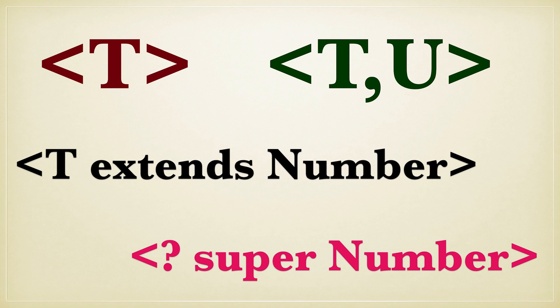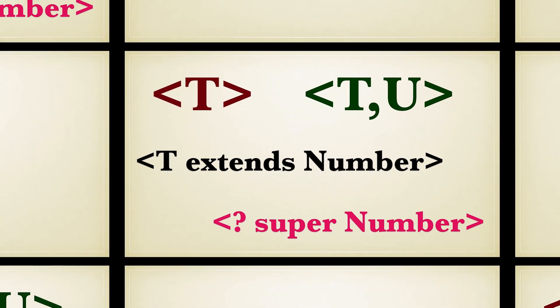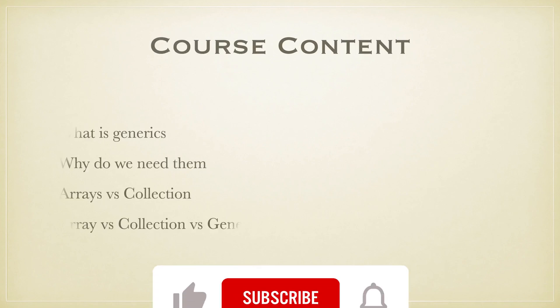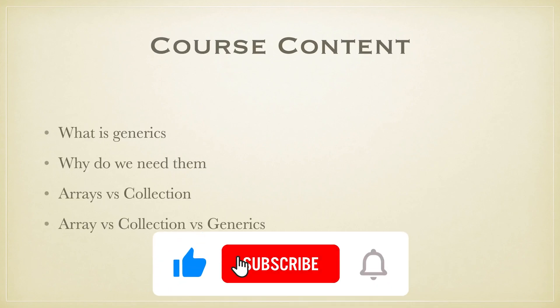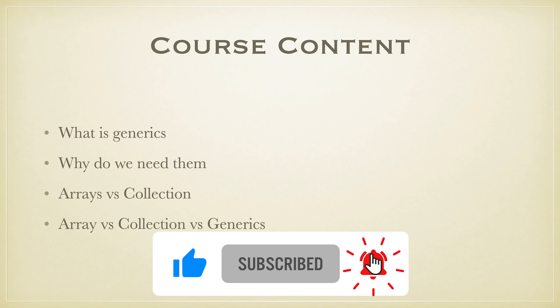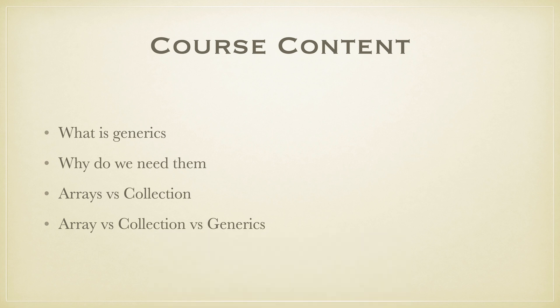Let me tell you what the course content covers. We're going to talk about what generics are and why we need them, and then we'll talk about arrays and collections — there must be some reason why we moved from arrays to collections. What is missing in arrays that is available in collections? After that we move to generics, which were introduced in Java 5.